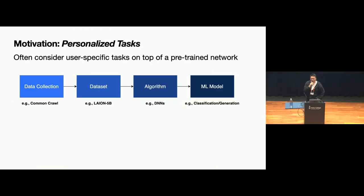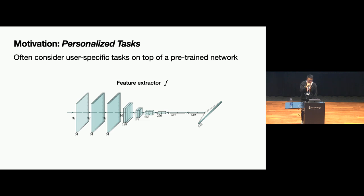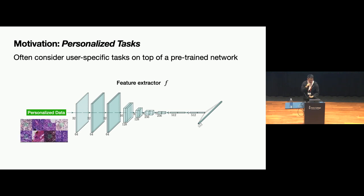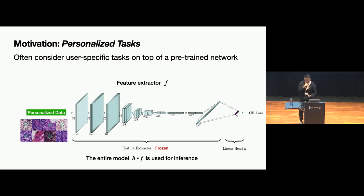For this kind of personalized task, or tasks out of the region where we can collect massive data, we abstract the pipeline to what we call a general feature extractor app. This app can be trained by another party and utilized by personalized users. Specifically, personalized users collect a small dataset — for example, in medical imaging — and train an additional linear layer on top of a fixed pre-trained encoder F, to get a good classifier. During inference, they use the entire F and H for prediction.